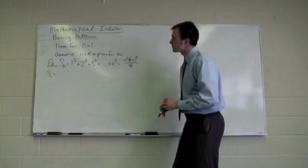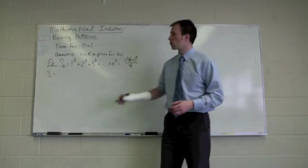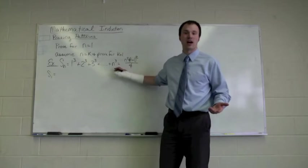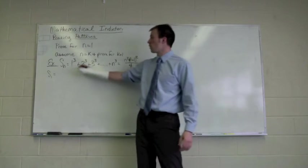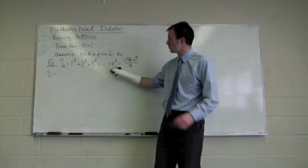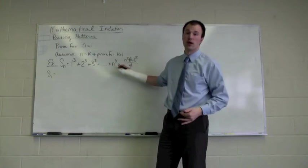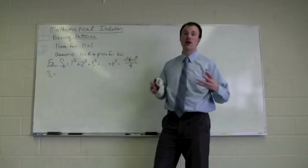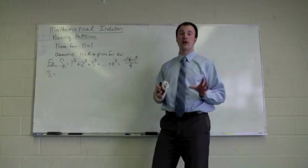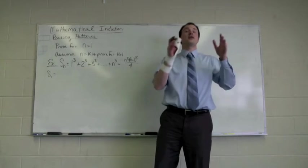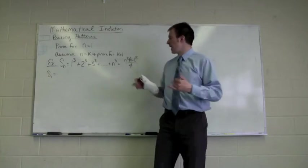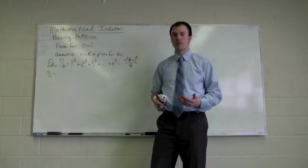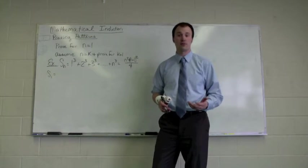In this video, we're going to be looking at s sub n equals the sum of the cubes of the integers. So we've got 1 cubed, 2 cubed, 3 cubed, all the way out to n cubed, which is supposedly also equal to the formula n squared times the square of the next number, n plus 1 squared, dividing the whole thing by 4. To prove this by mathematical induction, we've got to do a couple of things.